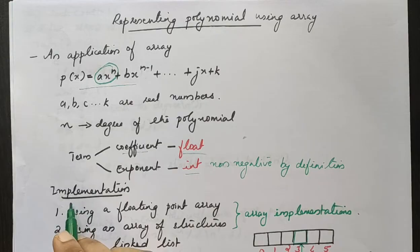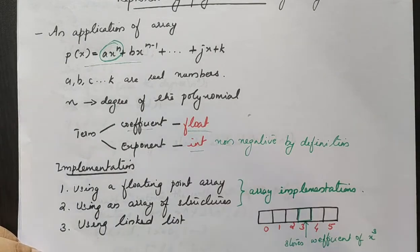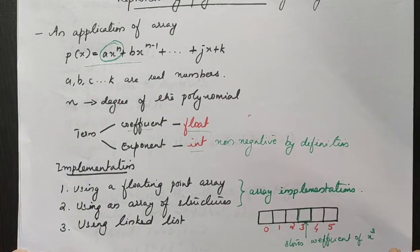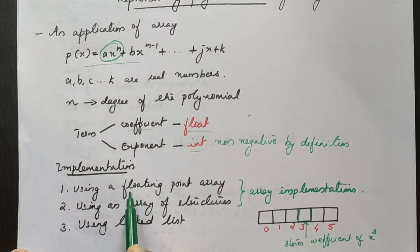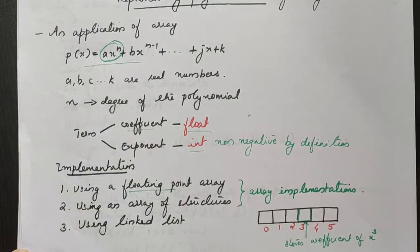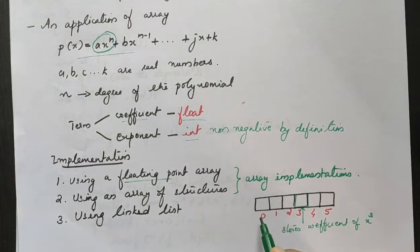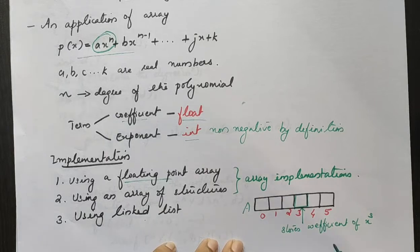There are three options for polynomial representation. The first option is using a floating point array. The second is using an array of structures, and the third is using a linked list. In this video, we will cover the floating point array implementation.